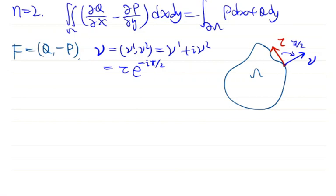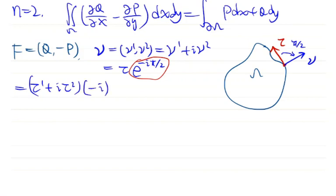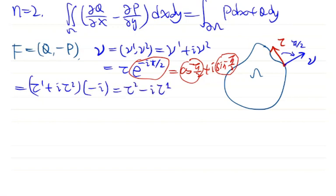Because we rotate clockwise, the angle is −π/2. Writing τ = τ₁ + i τ₂, we get e^(−iπ/2) = −i, since cos(π/2) = 0 and sin(−π/2) = −1. Therefore ν = (τ₁ + i τ₂)(−i) = τ₂ − i τ₁, so in coordinates the unit normal vector ν has components (τ₂, −τ₁).